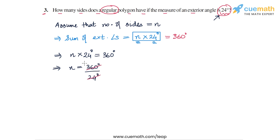And if you do the division, you will get the value as 15. So n equals 15, which means that the number of sides of the regular polygon is 15. That's the answer to question number 3.